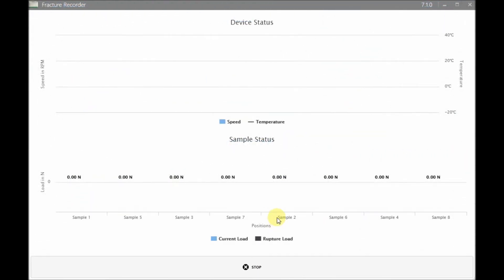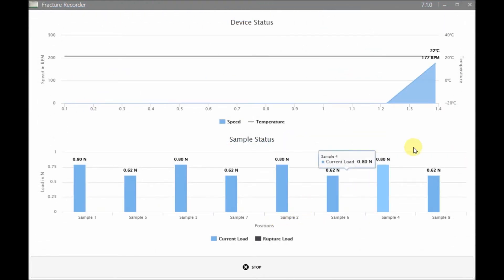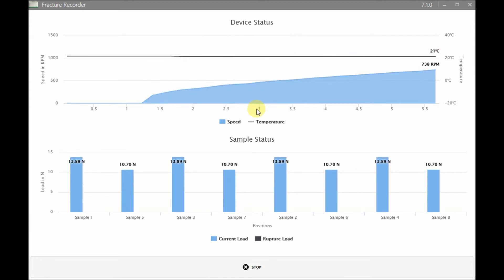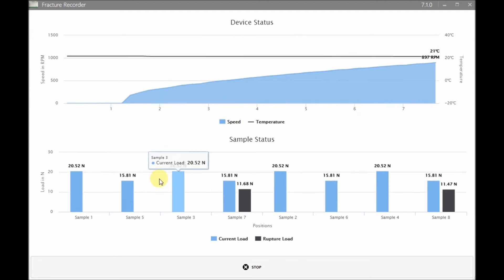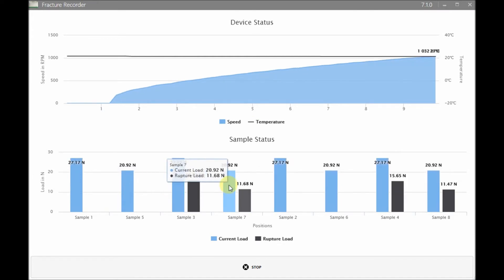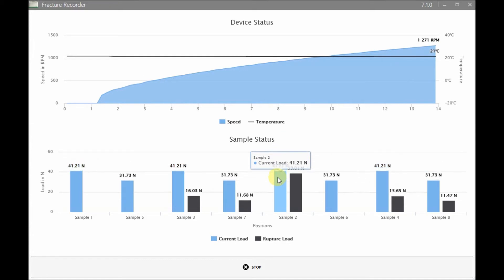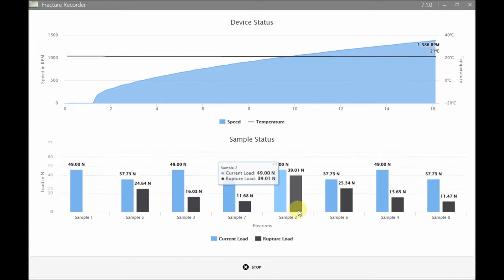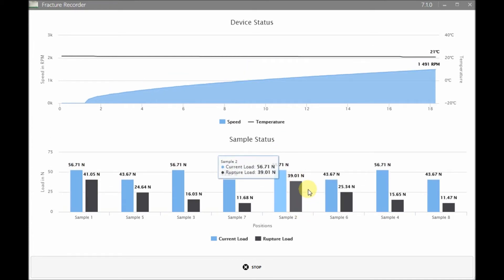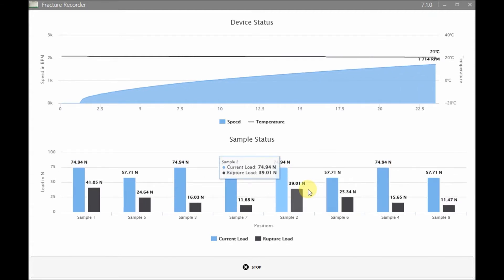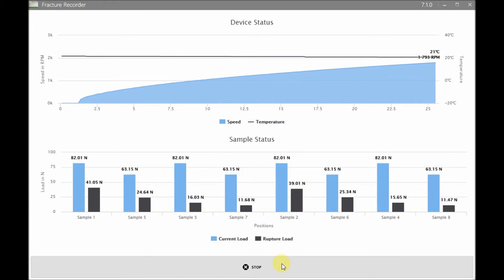During the measurement, speed and temperature are displayed in real-time in the device status graph in the upper part of the recorder window. The current applied loads for each sample are shown in the lower chart as vertical blue bars. When a sample detaches, a grey bar next to the blue bar shows the rupture or breaking force for the corresponding sample. See now how the breaking force is displayed for all of our samples. Now we can stop the measurement.